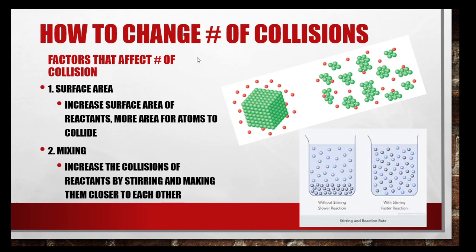How do we change the number of collisions? The first one is surface area. We spread things apart — maybe we crush them. So we increase the surface area of reactants, giving more area for atoms to collide. Sometimes we will crush them — you'll see me crush them in the lab — or you can dissolve them in water as well. Mixing increases the collisions of reactants by stirring and making them closer to each other. Without stirring, it's a slower reaction; they're kind of farther apart, some settled down.